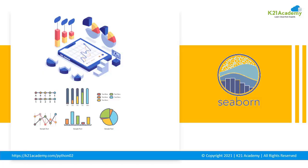Next is Seaborn — a library for making statistical graphics in Python. It builds on top of Matplotlib and integrates closely with pandas data structures. It helps you explore and understand your data. Its plotting functions operate on data frames and arrays, performing necessary semantic mapping and statistical aggregation to produce informative plots. Its dataset-oriented and declarative API lets you focus on what plot elements mean rather than the details of how to draw them.